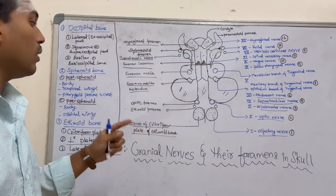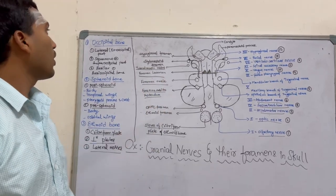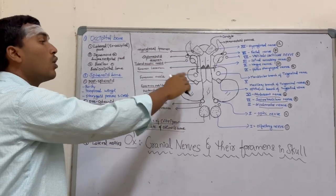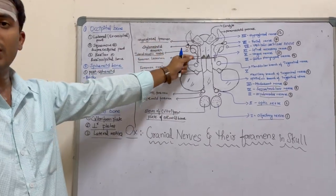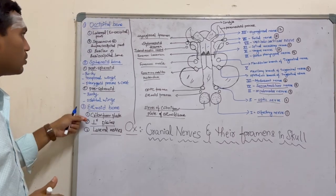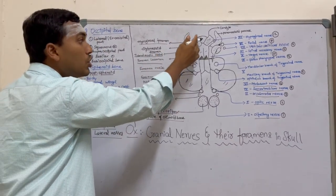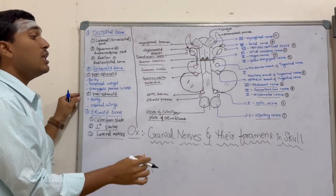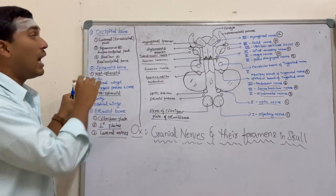Coming to the posterior part of the skull — the bones involved in the formation of the posterior part of the skull are very essential in the formation of the foramina through which the cranial nerves arise.